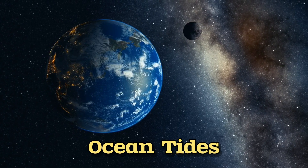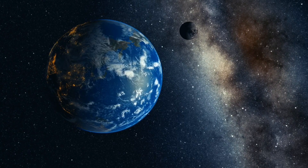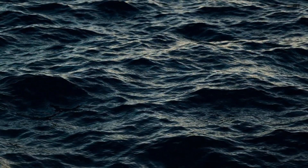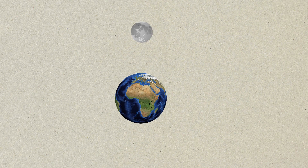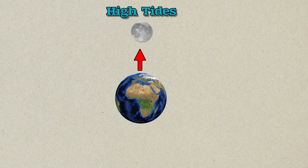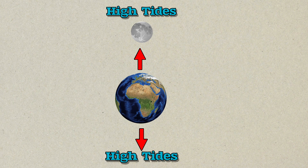The gravitational force exerted by the Moon causes the rise and fall of tides in Earth's oceans. When the Moon is positioned in a certain direction, it pulls the ocean water towards it, creating high tides. Simultaneously, on the opposite side of the Earth, another high tide occurs.